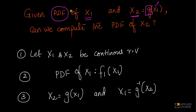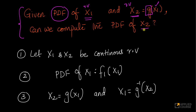So, what am I given? I am given the PDF of x1, and I am given x2, which is another random variable. x1 is one random variable, x2 is another random variable which is related to x1, and I can compute x2 as a function of x1. The question is: given the PDF of x1, can we compute the PDF of x2?